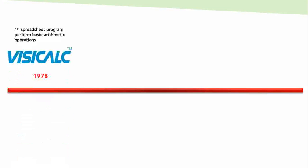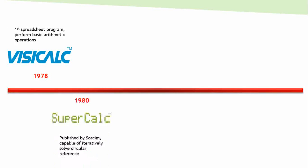In 1978, VisiCalc was developed, which was the first spreadsheet program and it could perform basic arithmetic like plus, minus, etc. Then in 1980, SuperCalc was developed and it was capable of iterations, solving circular references, etc.